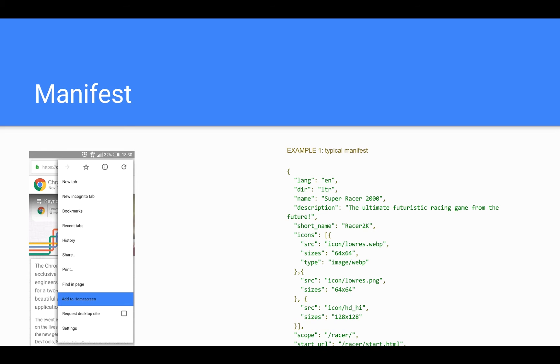The manifest.json is a JSON file placed in the root directory of the website. It contains simple information such as the name and description of the Progressive Web App, and icons displayed when loading the splash screen after the user has installed your app. The manifest.json is also a prerequisite for push notifications using Google Cloud Messaging, as we need to include the sender ID within it.